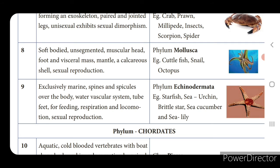Phylum Echinodermata — examples: starfish, sea fish, brittle star. They are exclusively marine, meaning they live only in water. They have spines and spicules over the body, a water vascular system, and tube feet used for feeding, respiration, and locomotion. Reproduction is sexual.